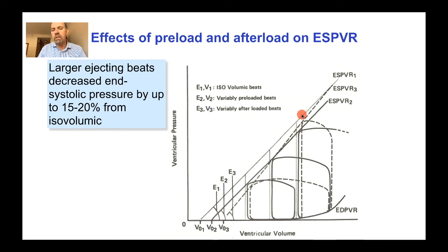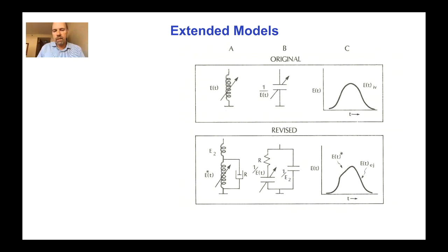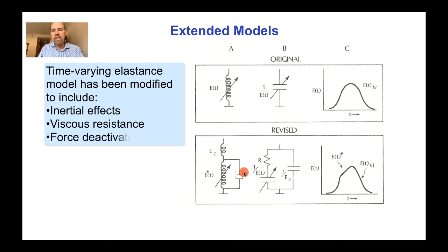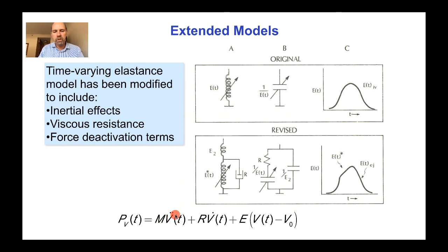Various extensions to the time-varying elastance model have been proposed, including models that incorporate inertial effects of blood acceleration (a mass added to the spring system), viscous resistance to blood flow, and deactivating effects due to shortening. For example, a model that includes an inertial effect and a viscous effect in addition to the time-varying elastance. However, these models tell us more about the dynamics of ejection into the circulation than about the intrinsic properties of the heart muscle itself, which will be the topic of the next discussion.